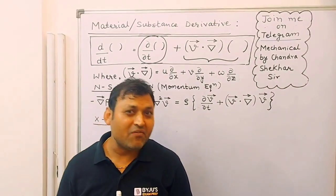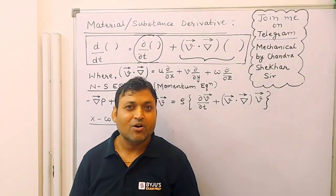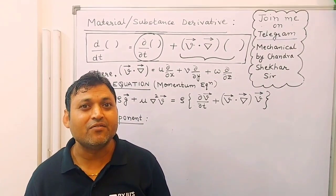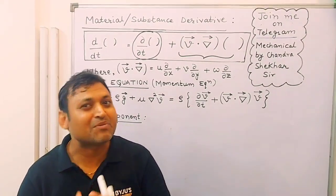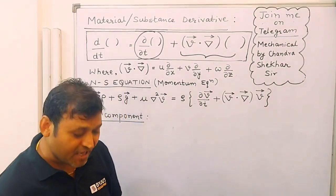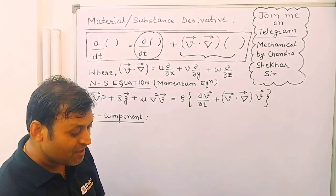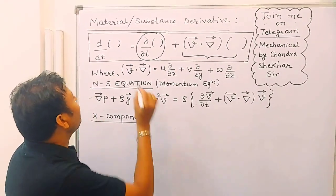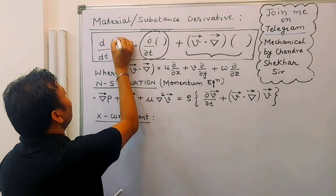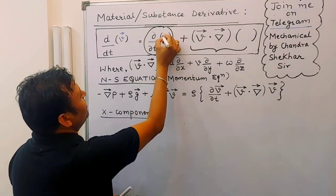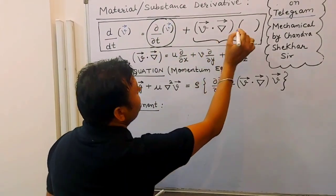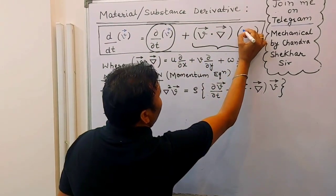Hello guys, in the previous video we had talked about the material derivative or the substance derivative of a parameter. The material derivative of velocity is acceleration — this is how we have discussed.